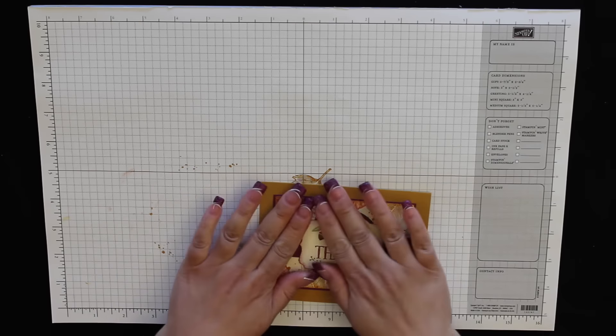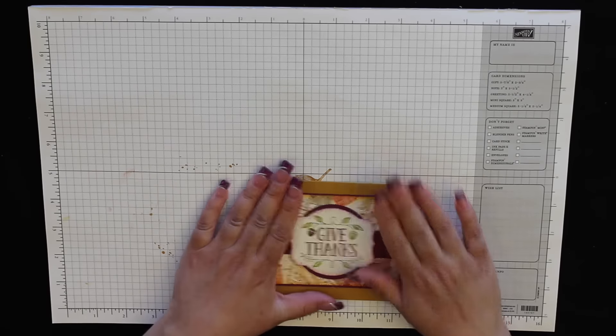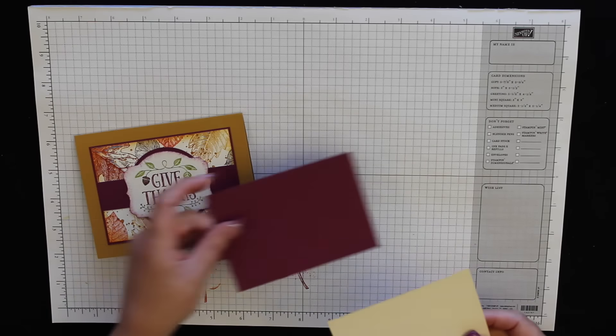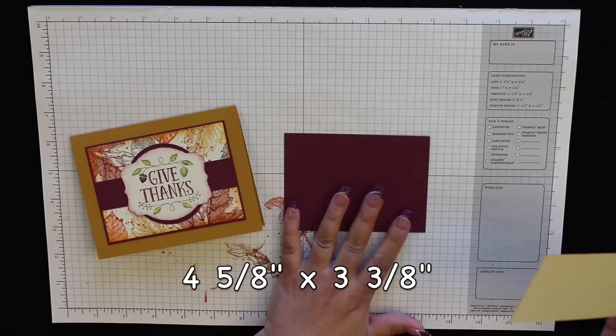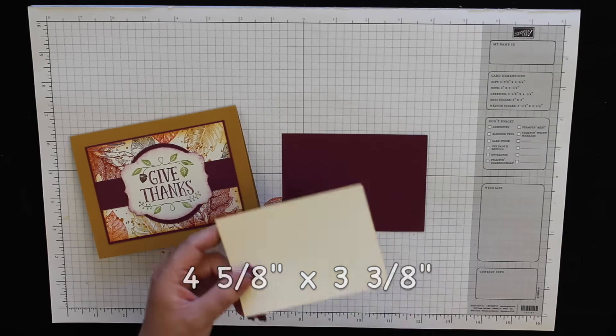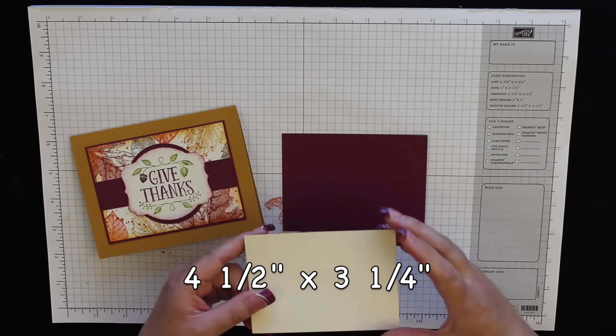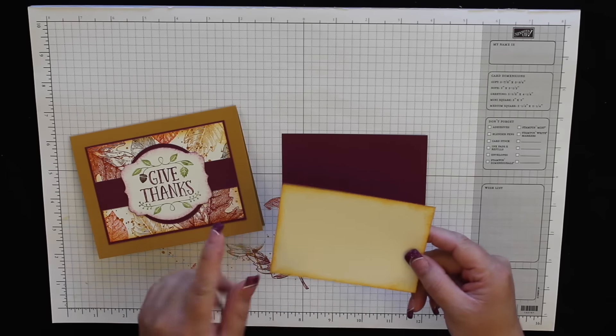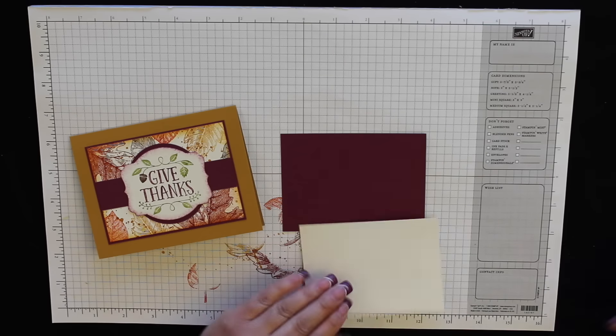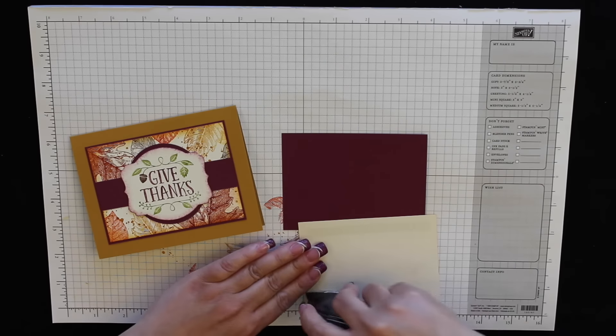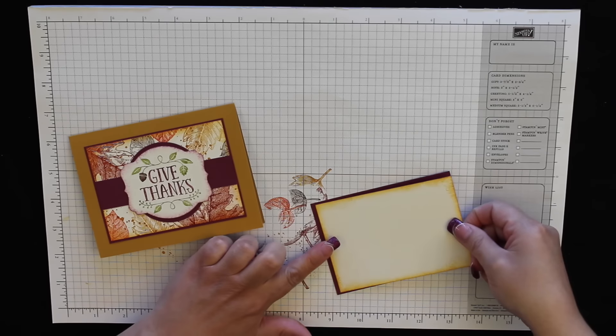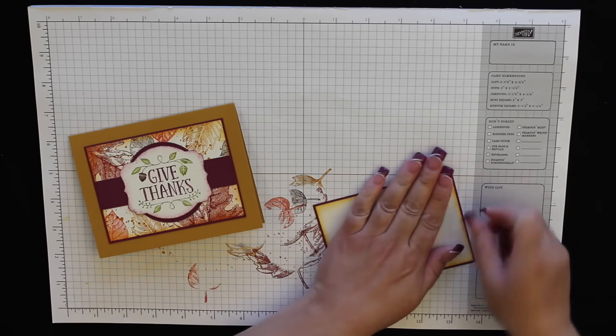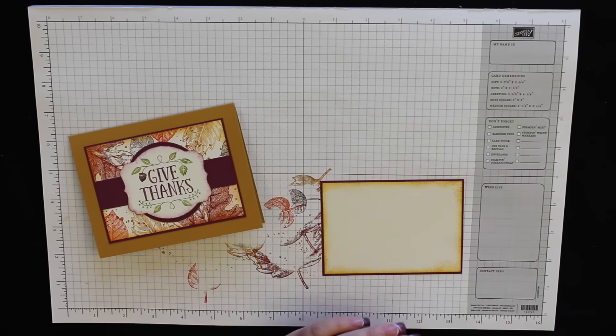Okay, now I did tell you earlier that you needed two pieces of the Rich Razzleberry. Here's the other piece for the inside. Again, this one measures four and five-eighths by three and three-eighths. This Very Vanilla measures four and a half by three and a quarter. To save time, I went around and sponged with the Delightful Dijon ink, so I'm going to add some adhesive here. I sponged around there so it would coordinate with the front of the card.